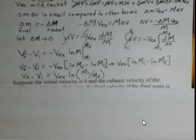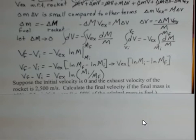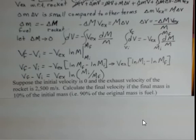So let's say we have an initial velocity of zero. The exhaust velocity is 2,500 meters per second. That's a reasonable number with today's technology, probably higher. But calculate the final velocity. If the final mass of a rocket is only 10% of the initial mass, what happened to the other 90%? It went out as fuel.